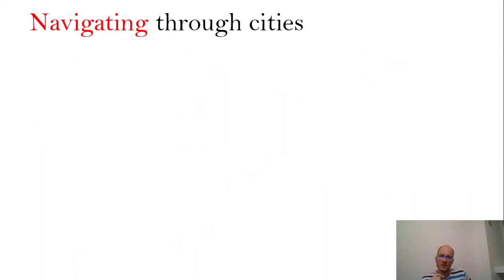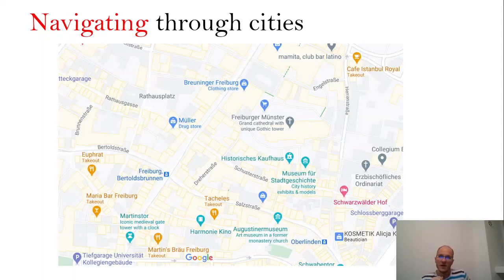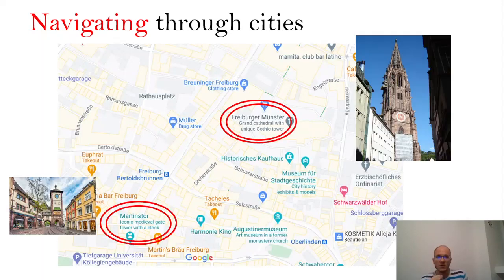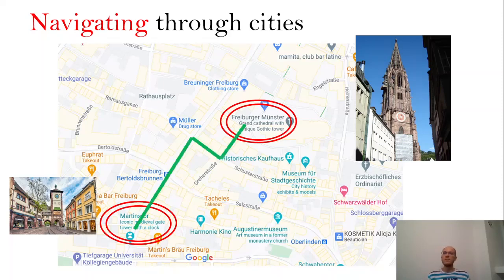The first scenario is navigating through cities. Imagine that you have a map of Freiburg and you want to go from Münster to Martinstor. You find these two places on the map, and then you skim over the streets and neighboring streets of these two places. Soon enough you figure out that this green path is short enough to get you from one to the second place.